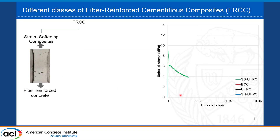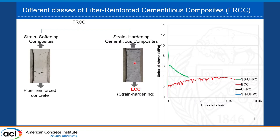Fiber-reinforced composites are categorized based on their tensile behavior into strain softening materials and strain hardening materials. In strain softening materials, the fiber bridging capacity is lower than the cracking strength, so after forming one crack, the strength drops directly. In strain hardening materials, after the matrix cracks, the fibers provide higher bridging capacity, forcing the material to form more and more cracks and achieve larger deformation capacity.